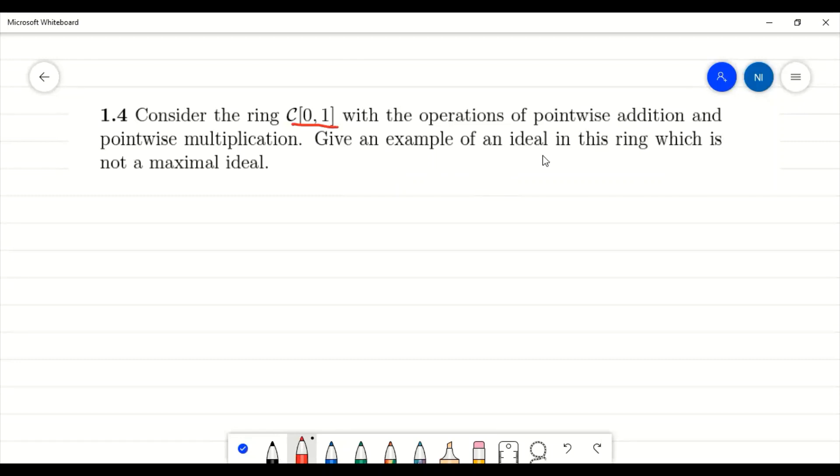They are asking: give an example of an ideal in this ring which is not a maximal ideal. The question is simple - you need to find an ideal in this ring C[0,1] that is not maximal. Let's see how to approach this type of question.